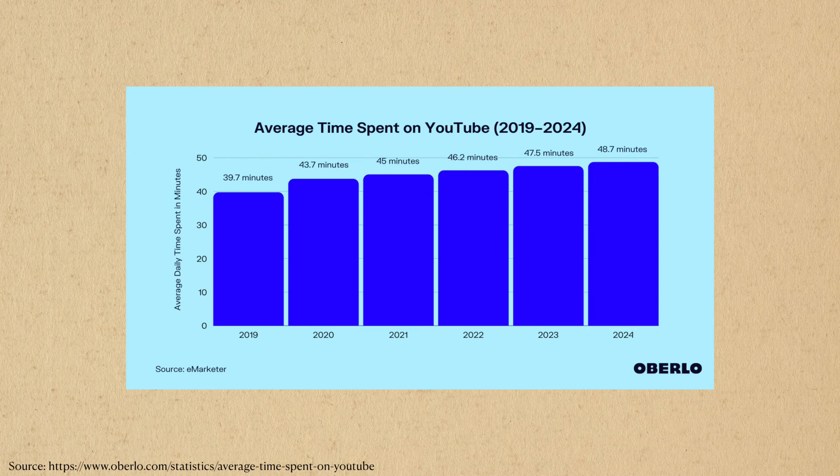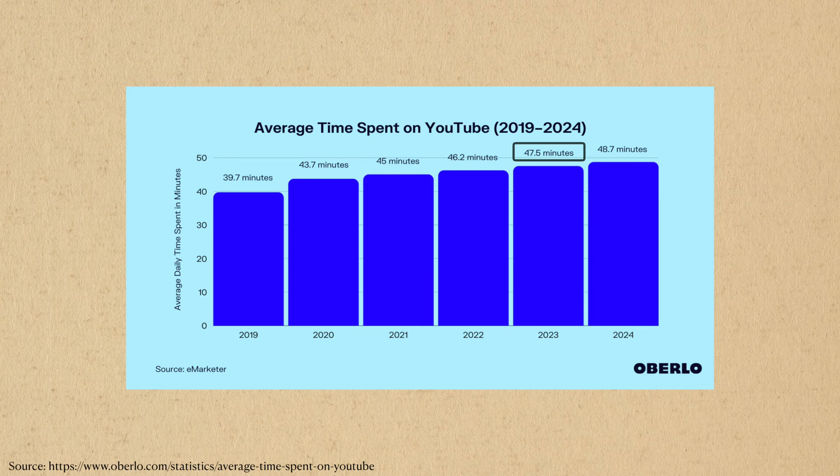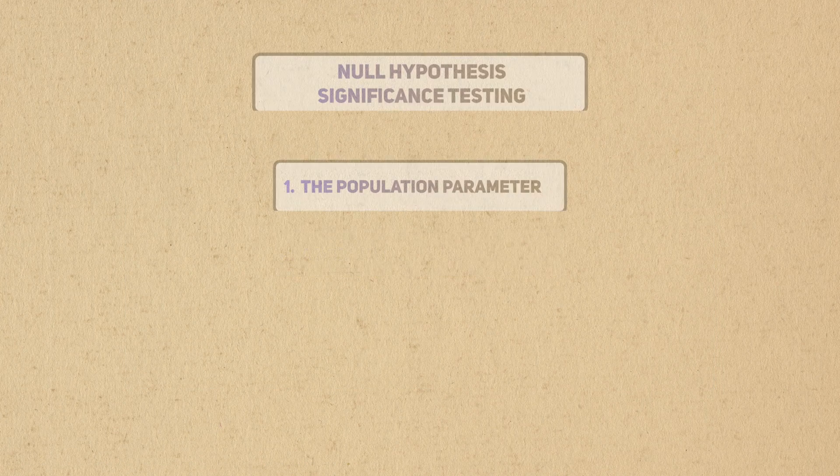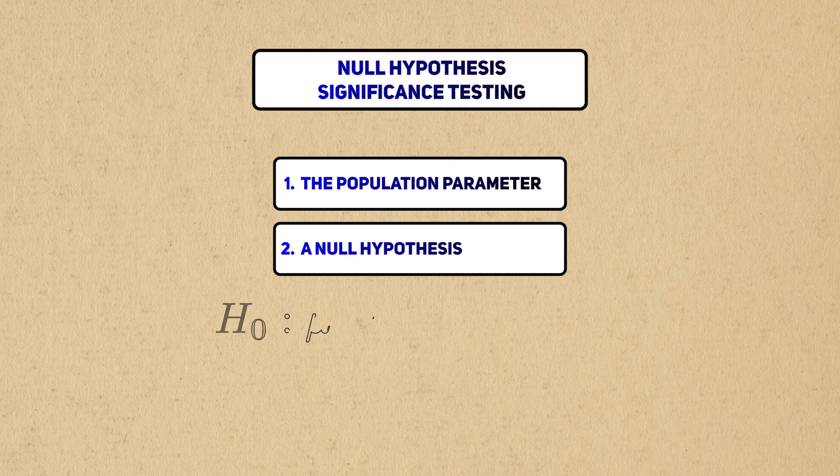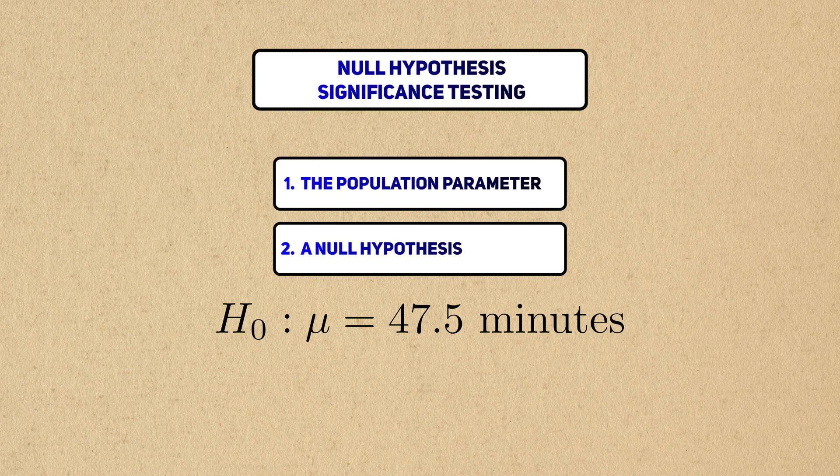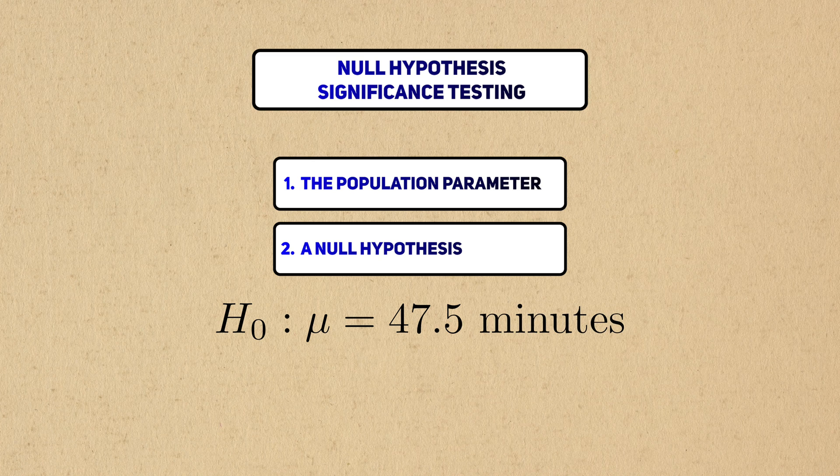Because we're still in 2023, I'll use their estimate from this year and use it as our null hypothesis. Explicitly, our null hypothesis is that the average watch time a person watches YouTube is 47.5 minutes.